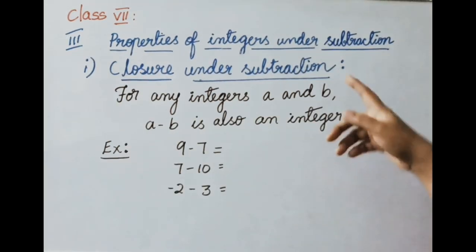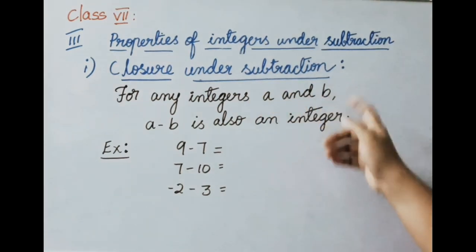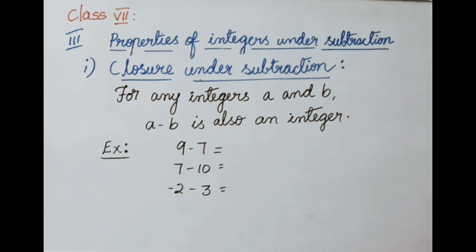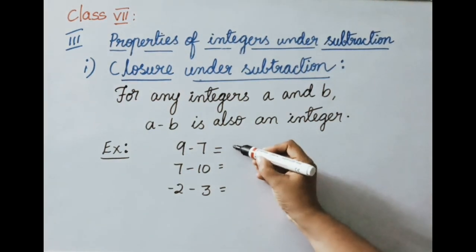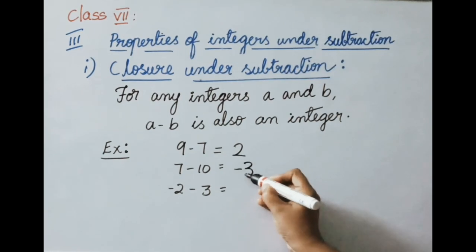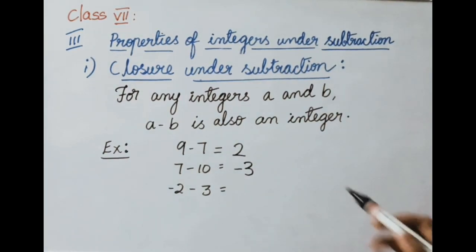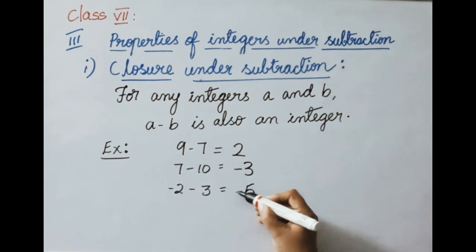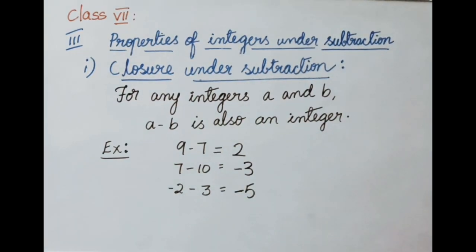Third section: properties of integers under subtraction. First, closure property: for any integers A and B, A minus B is also an integer. Example: 9 minus 7 equals 2 — an integer. 7 minus 10 equals minus 3 — also an integer. And minus 2 minus 3 equals minus 5 — also an integer. Therefore integers follow closure property under subtraction.